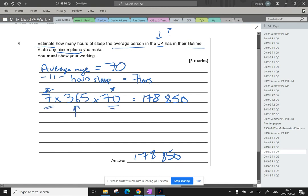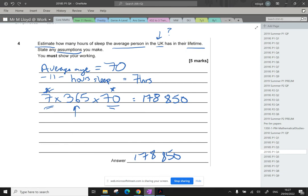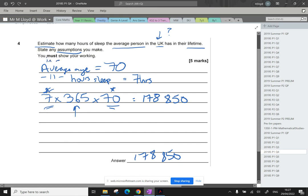Now, 365, from marking some of these papers, that is the most common mistake. Some people will, to be honest, I could write it as an assumption that in a year there's 365. Because some of you may be saying, well, it's 365.25 because of a leap year.